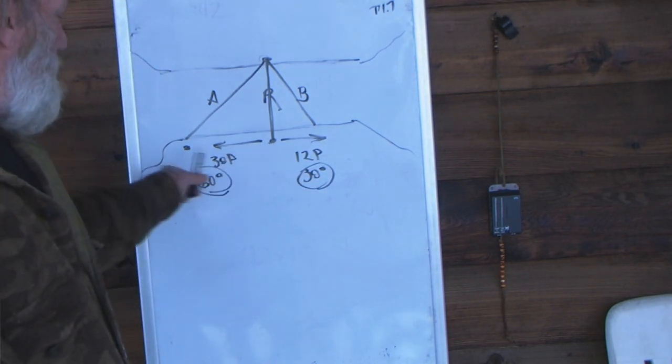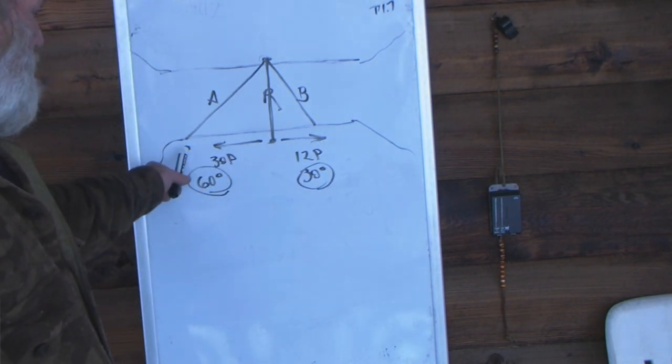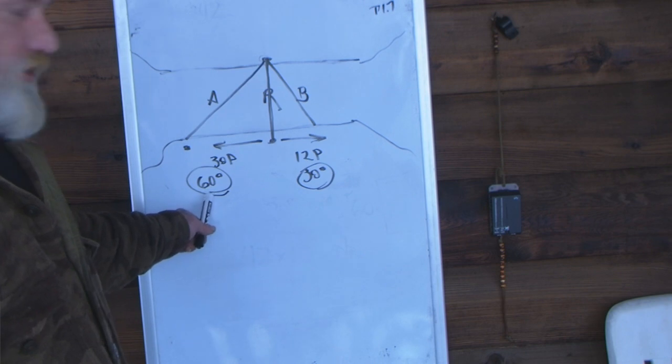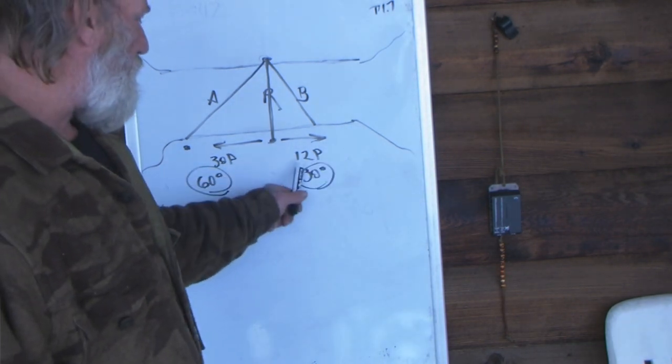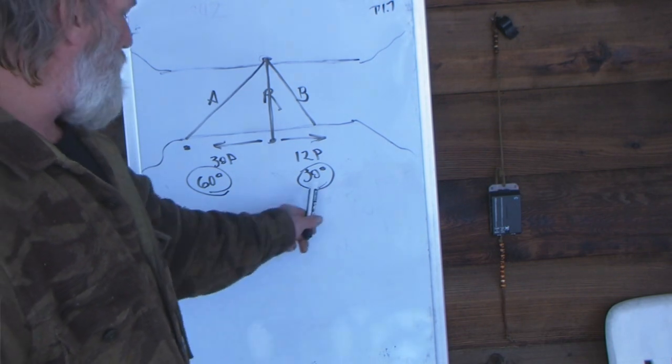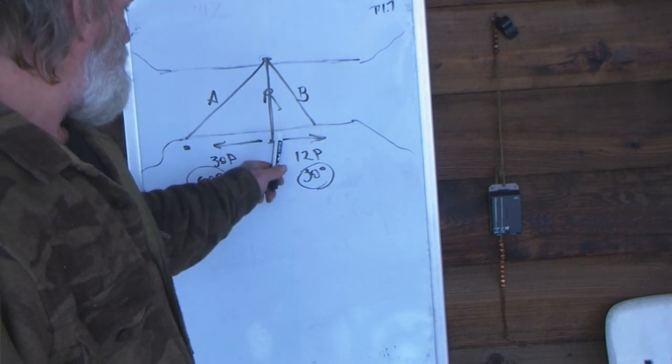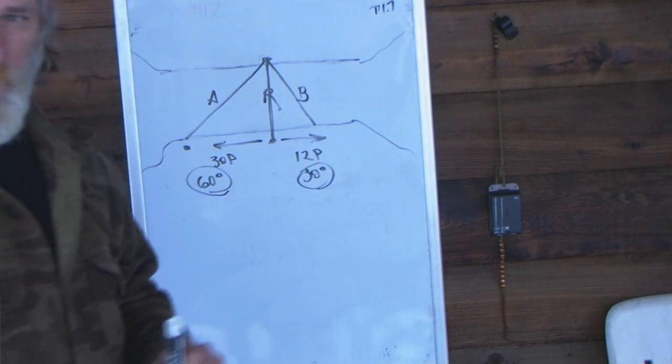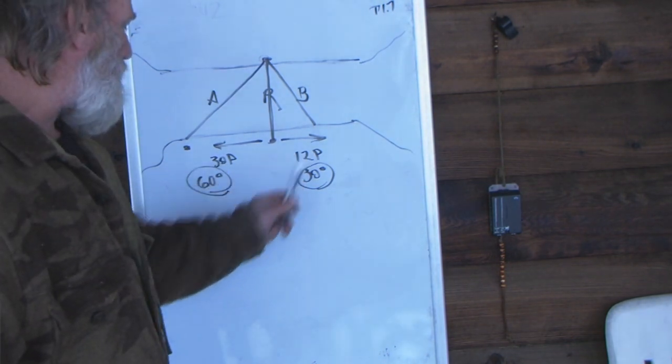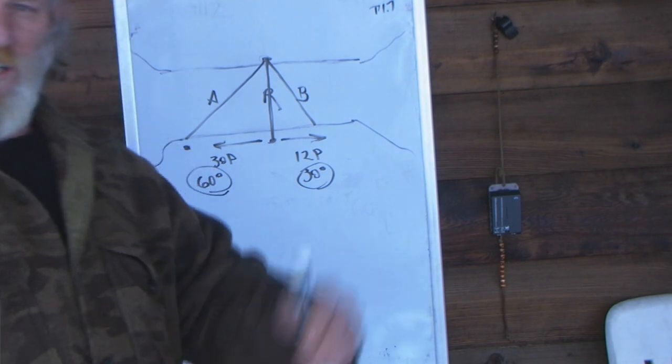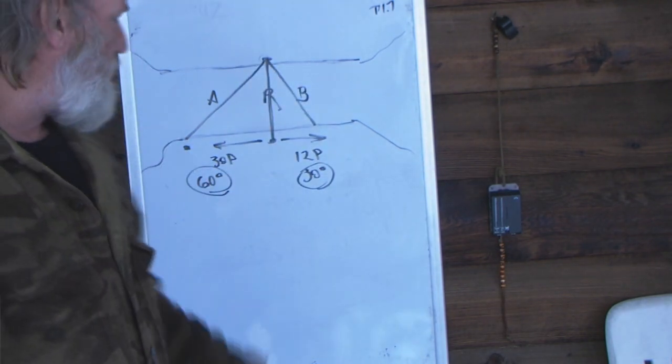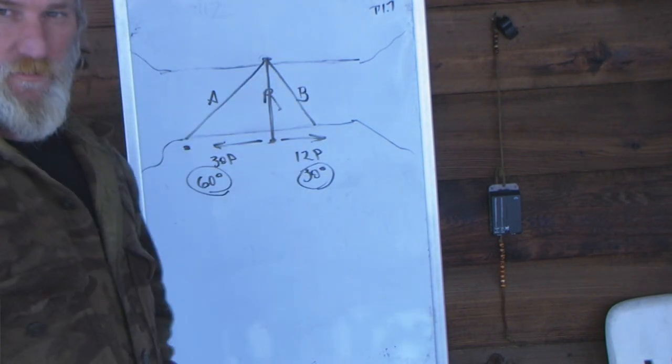So in this case, we'll say that we walked 30 paces in this direction and we've got a 60 degree difference between the reading here and the reading here. Then we walked the other direction, we were only able to walk 12 paces and we've got a 30 degree difference in the reading from here to here. If we have our pace count and our degree readings, that's all we need, as long as we have our tangent table written down.